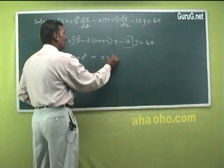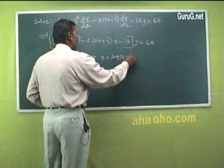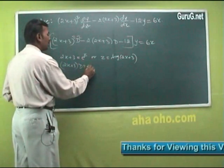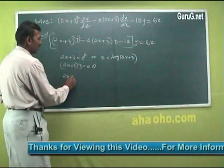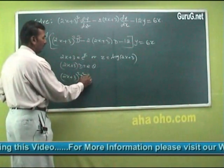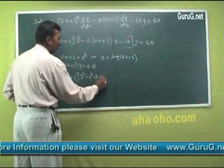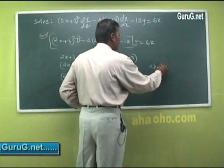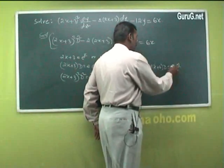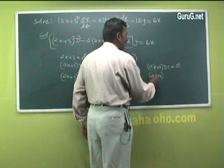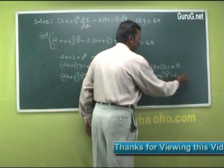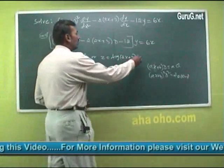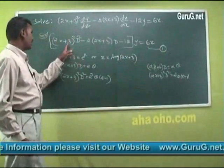So z = log(2x+3), and applying the general formulas: (2x+3)D = 2θ, and (2x+3)²D² = 2²·θ(θ−1) = 4θ(θ−1). Comparing with the general case ax+b, here a = 2, so these substitutions follow directly.